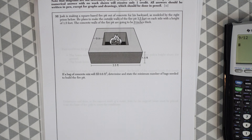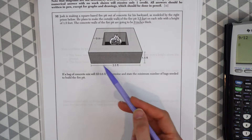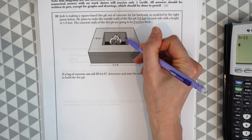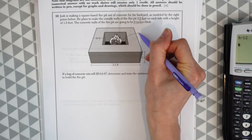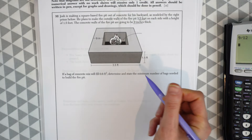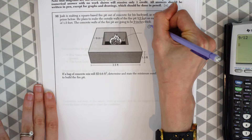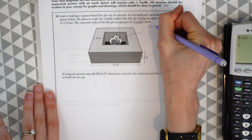The question asks: if a bag of concrete mix will fill 0.6 feet cubed, state the minimum number of bags needed to build the fire pit. There are multiple parts to this question. The main thing we're going to do is find the volume of the whole prism, and then because there's a hole in it, we'll figure out how much volume is in the hole.